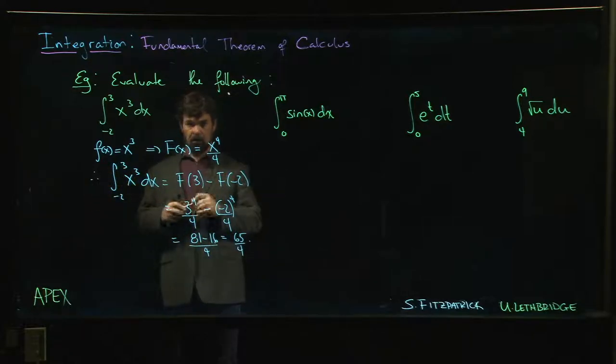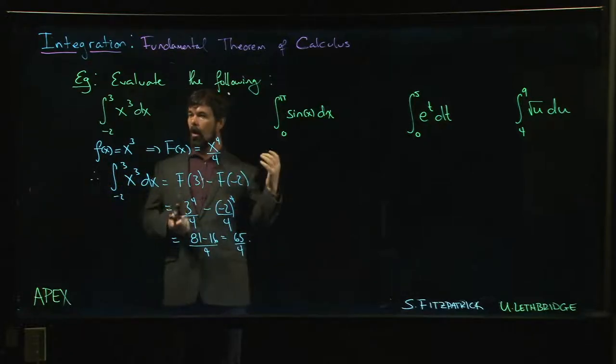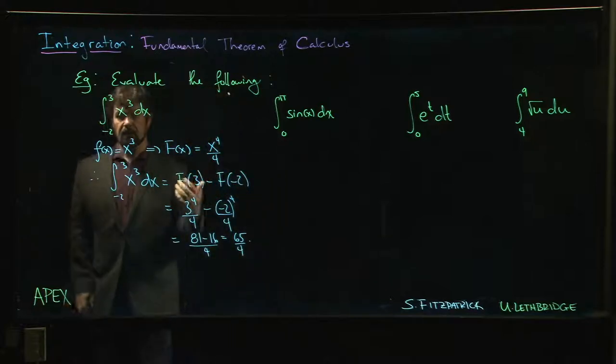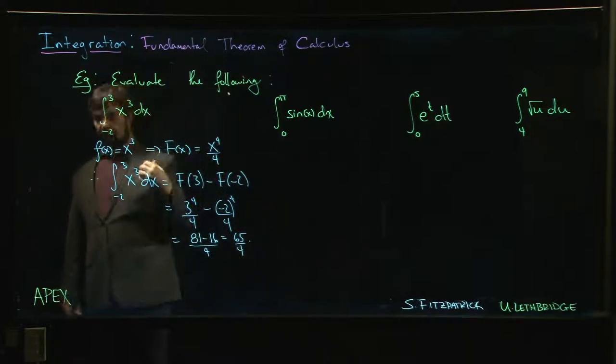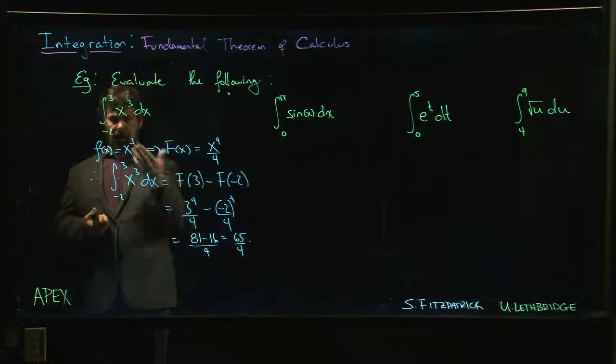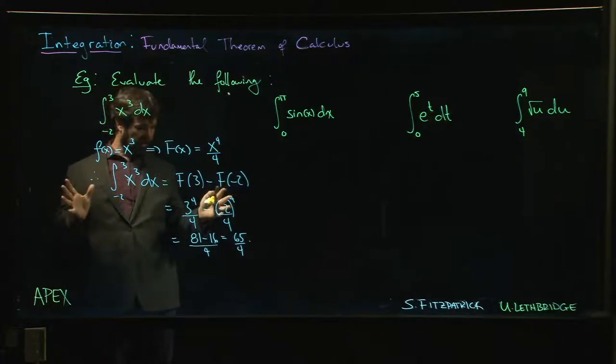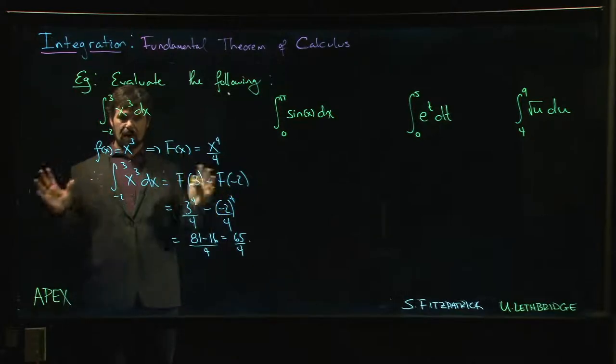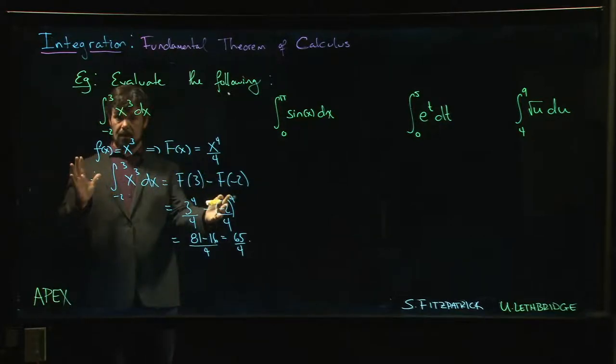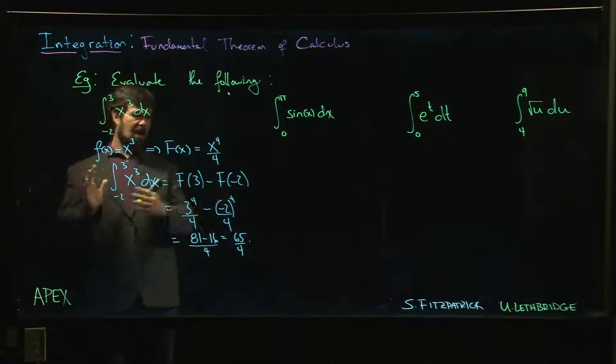That's the power of using the Fundamental Theorem of Calculus. The alternative would be to set up a partition with Riemann sums - in fact, we did this one before and it was a mess. It was one of our last Riemann sum examples where x_{i+1} looked like -2 + i times 5/n.